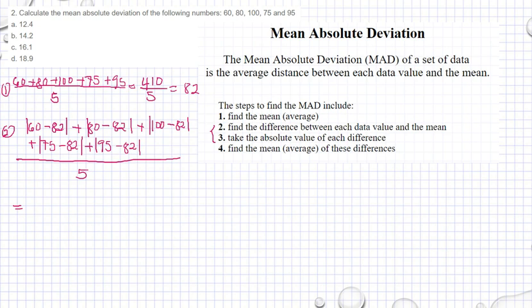I am doing steps 2, 3, and 4 at the same time. 60 minus 82 is negative 22, but the absolute value is 22. Plus, 80 minus 82 is negative 2, but the absolute value is 2.